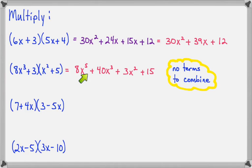Now if you look at all four terms, we have X to the fifth, X to the third, X to the second, and a constant. So there are no terms to combine. And this is our final answer.